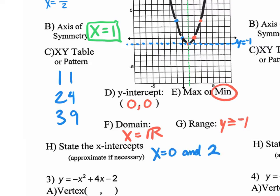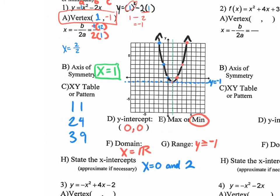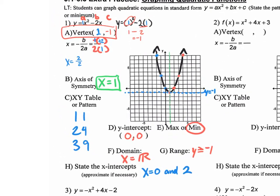Ladies and gentlemen, that right there on the quiz will be worth 10 points. Think about that. We have one point for the vertex, another point for the equation of the axis of symmetry, another point for the pattern, another three points for graphing, another point for the y-intercept, max or min, domain, and range. So it all adds up. Make sure you understand every bit of this. Let's move on to number two.